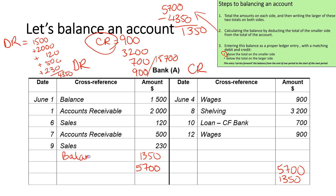I put in a balance entry on both sides. The last thing is the dates. This account is for the month of June, so the last day of the reporting period will be June 30, and the first day of the next reporting period will be July 1. And there we have a fully balanced account. This skill is really important because it can be worth marks in a SAC or exam — these are simple marks to get. Even if your transactions are incorrect, as long as you show the process of balancing correctly, you'll still be awarded those marks.